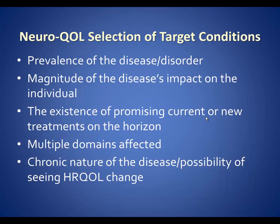NeuroQual was initially targeted for use in five adult and two pediatric conditions. The adult conditions were epilepsy, ALS, multiple sclerosis, Parkinson's disease, and stroke. The pediatric conditions were epilepsy and muscular dystrophies. These conditions were chosen on the basis of disease prevalence, impact on quality of life, whether or not there were promising treatments available or in the pipeline, and the likelihood of seeing change in health-related quality of life.